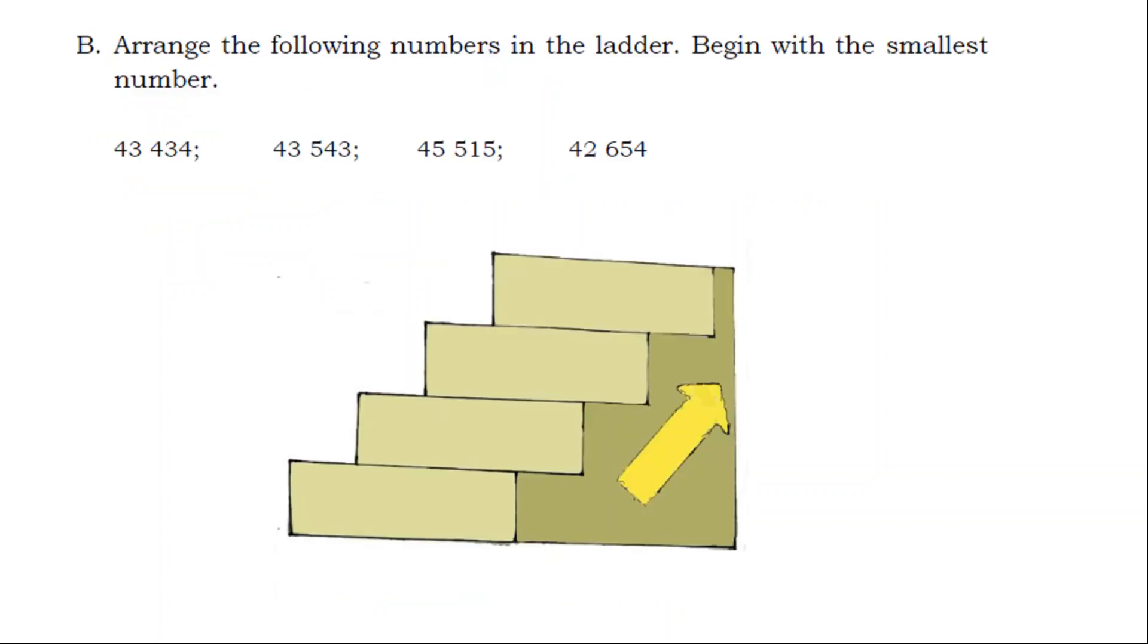B. Arrange the following numbers in the ladder. Begin with the smallest number. Answer. 42,654, 43,434, 43,543, 43,545.